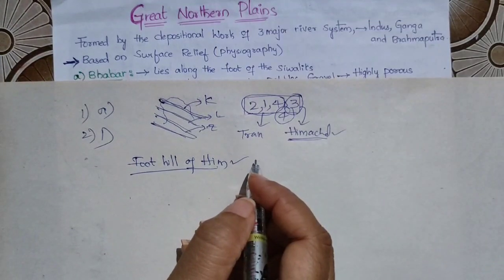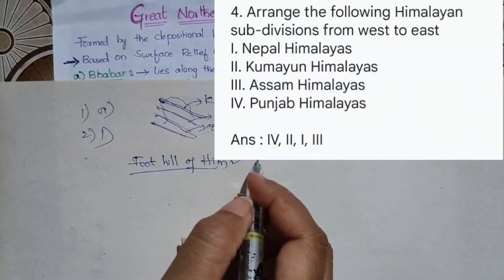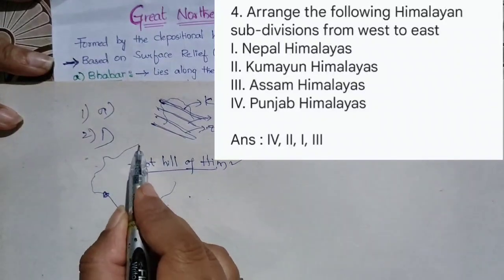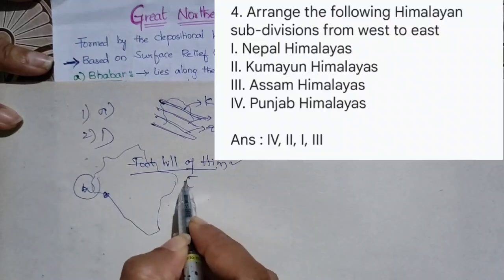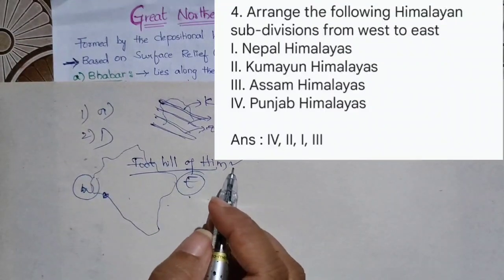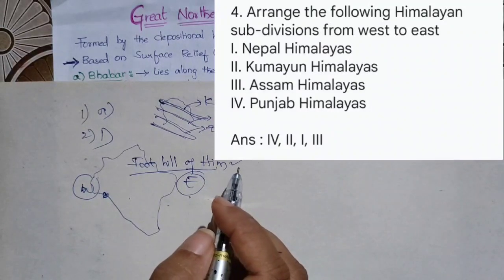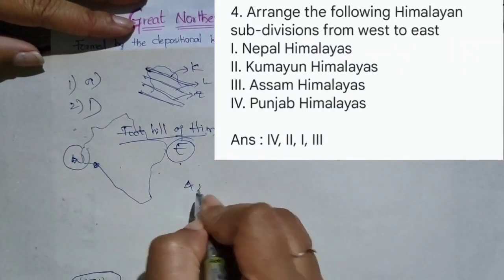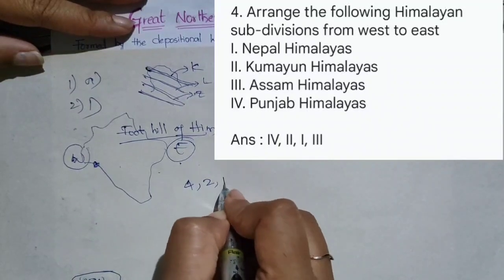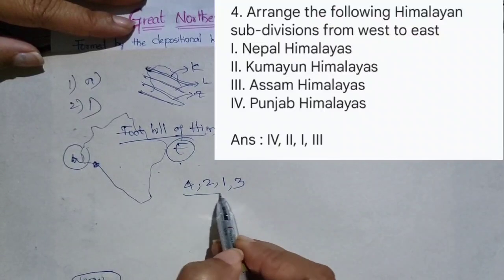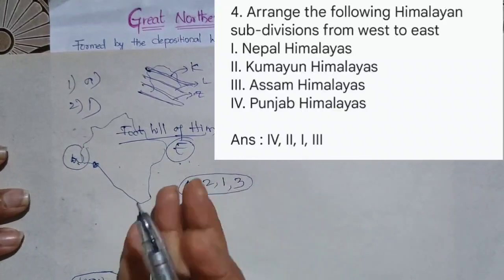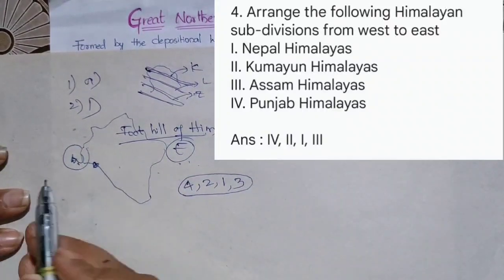Next question: arrange the Himalayan subdivisions from west to east. The options are: Nepal Himalayas, Kumaon Himalayas, Assam Himalayas, and Punjab Himalayas. Arranging west to east: Punjab is first, Kumaon is second, Nepal is third, and Assam is fourth. So our correct option is 4, 2, 1, 3 from west to east.